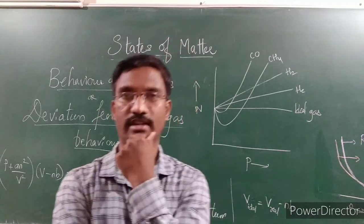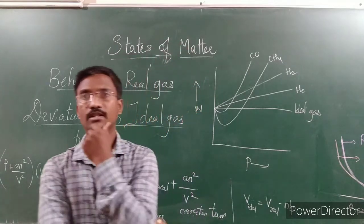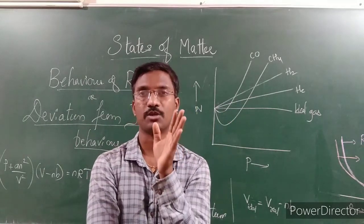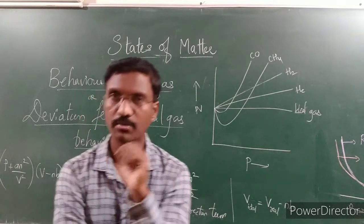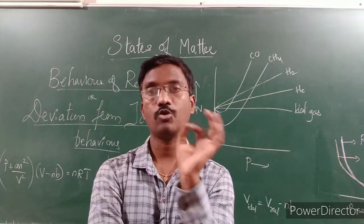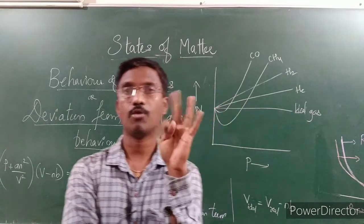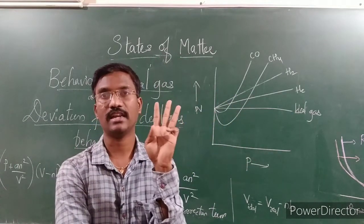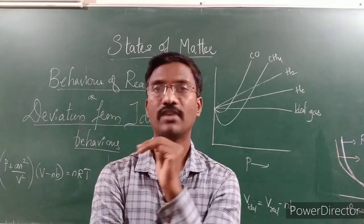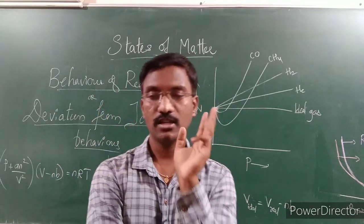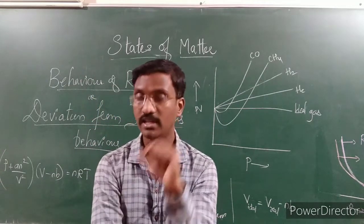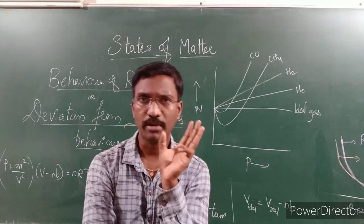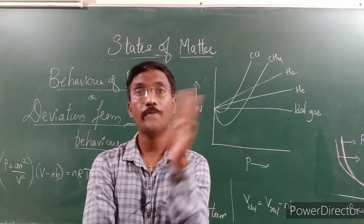In gaseous molecules, some gases are deviating — they are not obeying the ideal gas expression. The ideal gas expression applies to gases which obey Boyle's law, Charles' law, and Avogadro's law. Gases that do not obey these laws are called non-ideal gases.